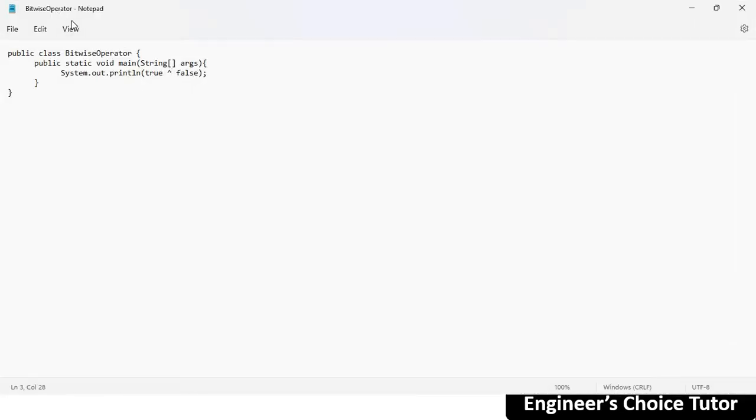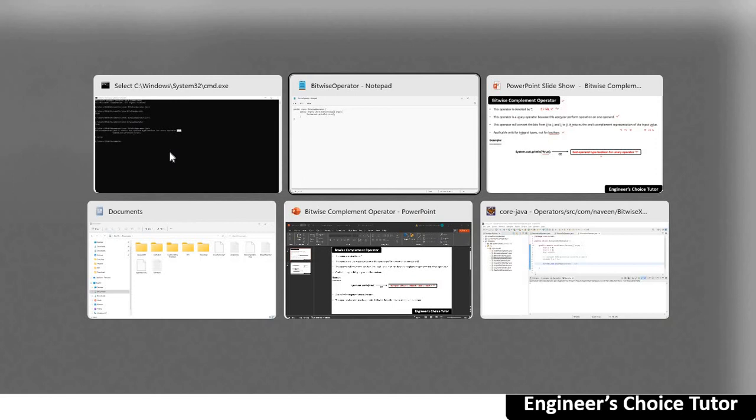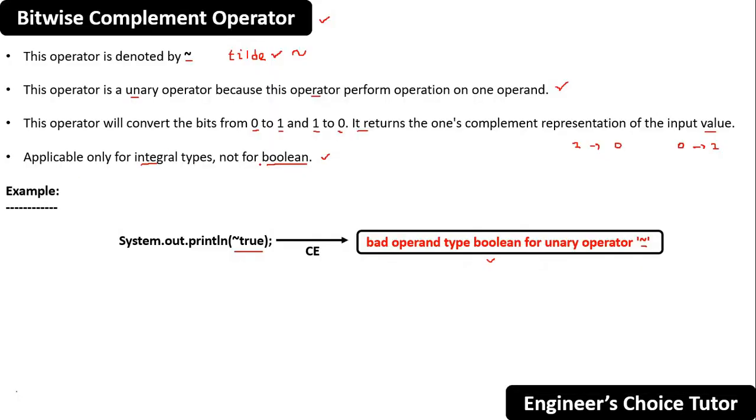I have this file already from the last three lectures, this class bitwise operator. So I'm passing tilde true, applying this bitwise complement operator on the boolean value true. I've saved this, now go to the command line and compile. Javac BitwiseOperator.java. See, bad operand type boolean for unary operator. System.out.println at this location, you are getting the compile time error. So remember this point, this is applicable only for integral types, not for booleans.